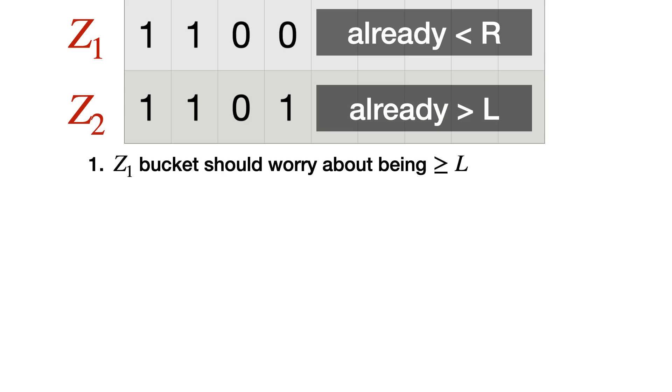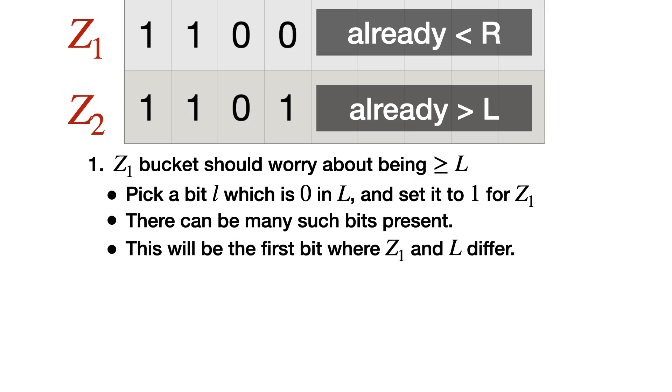For Z2, similarly, all the numbers will be greater than L in this category because we are having a one at the kth bit while L is having a zero. We have already ensured the partial constraint. For Z1, the Z1 bucket should worry about being greater than L. If we ensured that, now we know that the Z1 category is less than R and greater than L. It automatically ensures that Z1 is in the valid range.